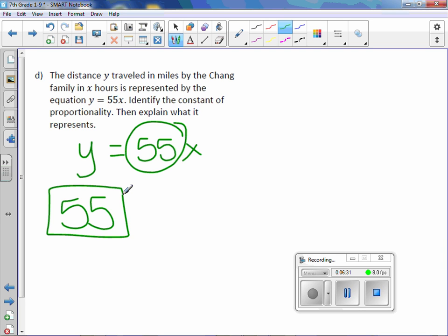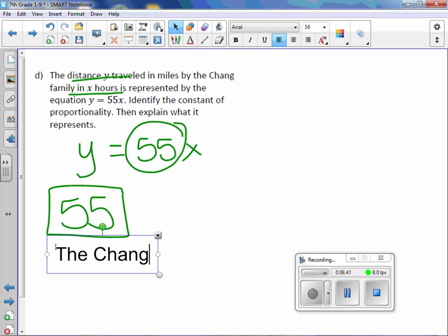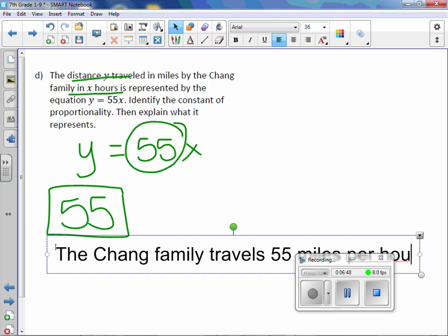And explaining what it means, we are talking about distance traveled in hours. So we could say this means the Chang family travels 55 miles per hour.